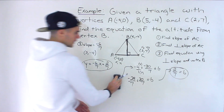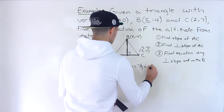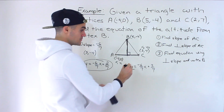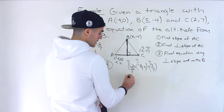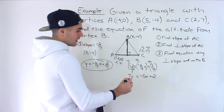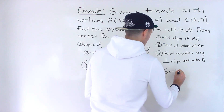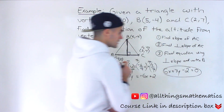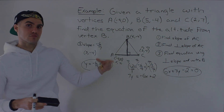To convert to standard form, multiply everything by 7 (the LCD): 7y = -6x + 2. Bring all terms to the left so the x-coefficient is positive: 6x + 7y - 2 = 0. Both forms represent the same line — the equation of the altitude from vertex B.